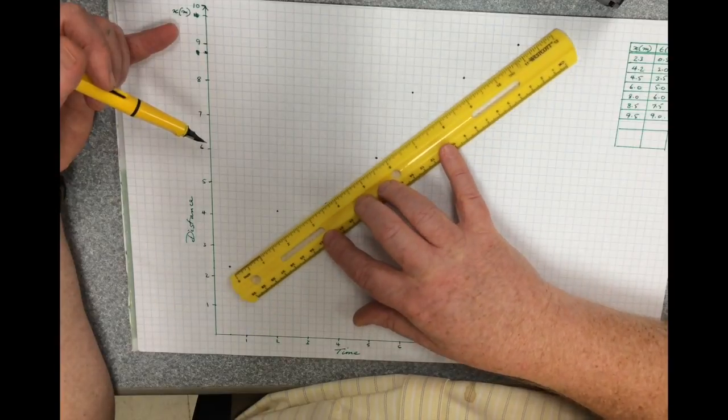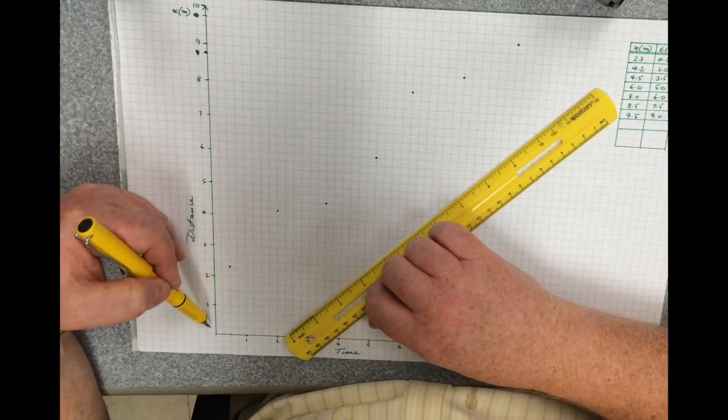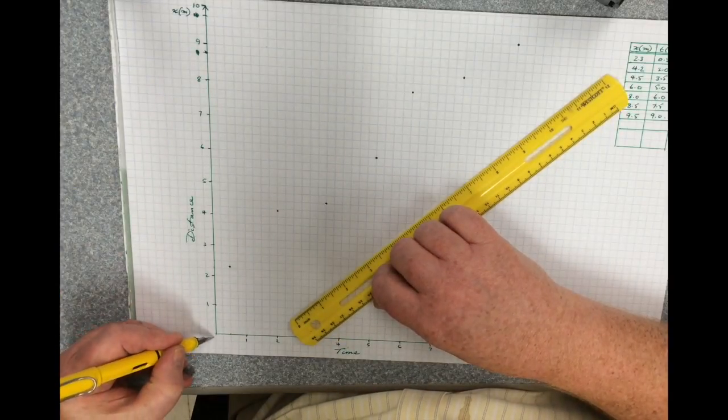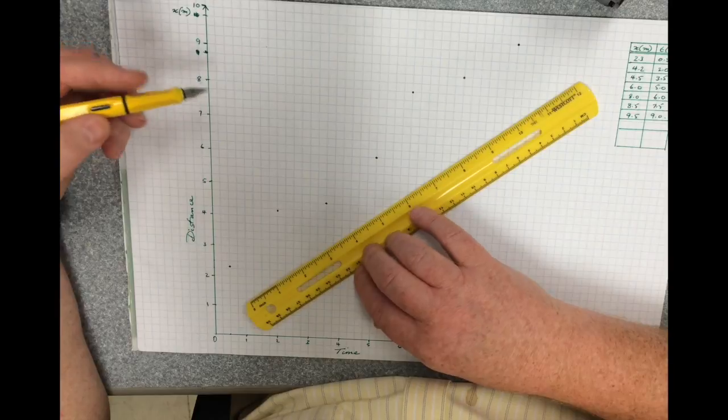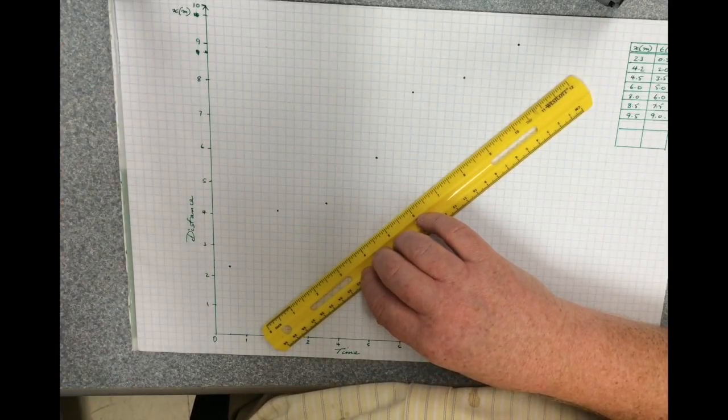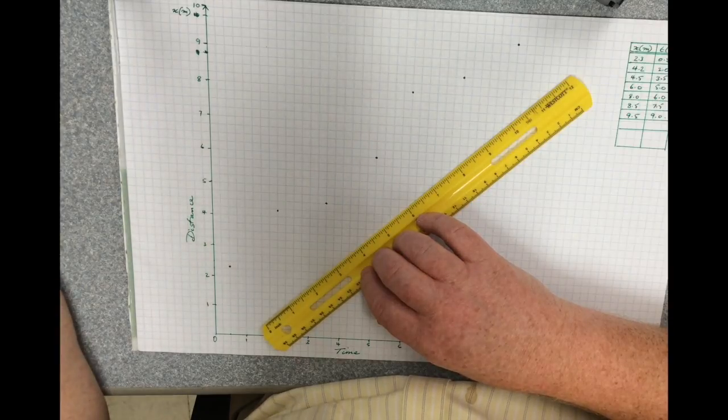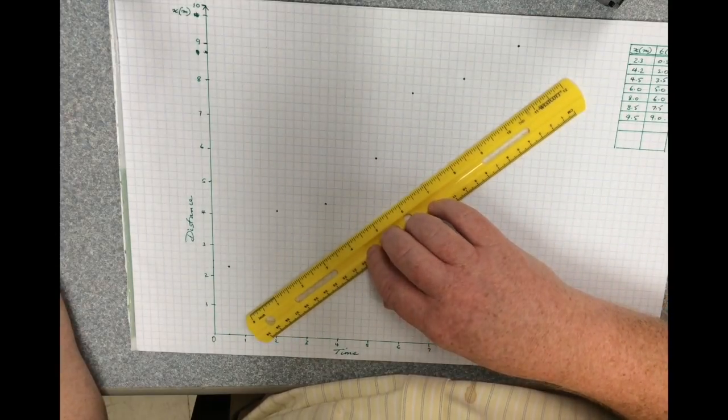It doesn't necessarily appear to be going through the origin, so I can't say that it is. If I were using this actual data, hopefully I will have seen that my measurement accuracy wasn't that good because the amount of scatter on this graph is quite large.